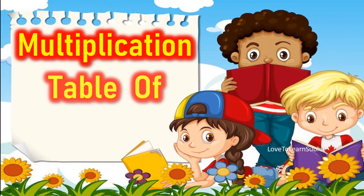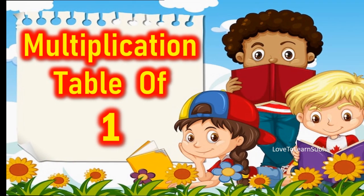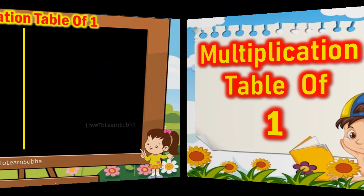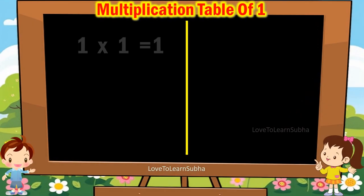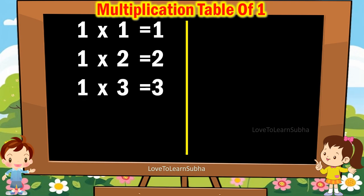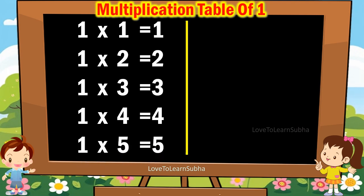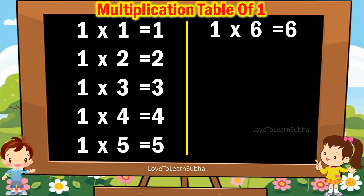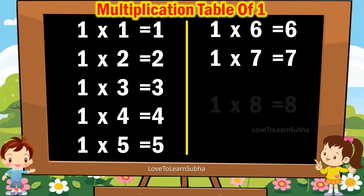Multiplication table of 1. 1 1s are 1, 1 2s are 2, 1 3s are 3, 1 4s are 4, 1 5s are 5, 1 6s are 6, 1 7s are 7.